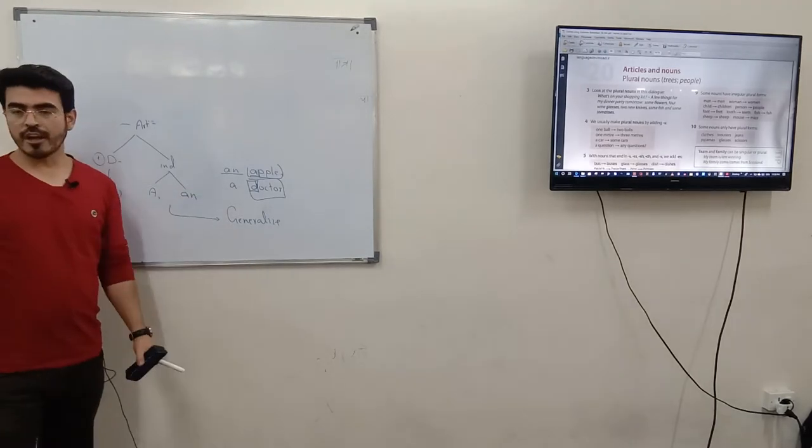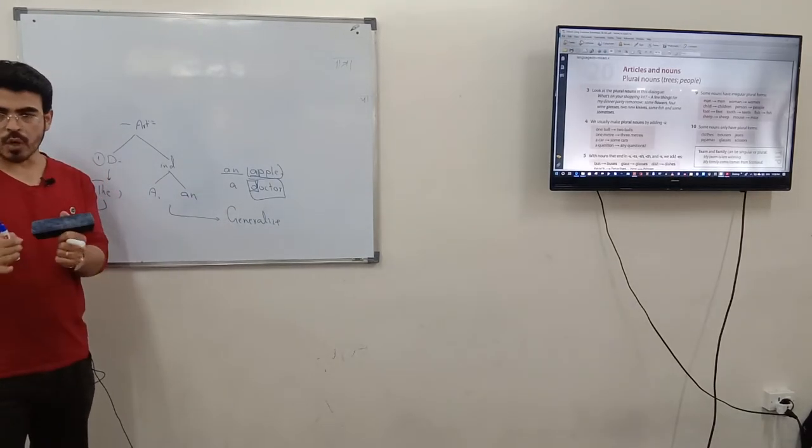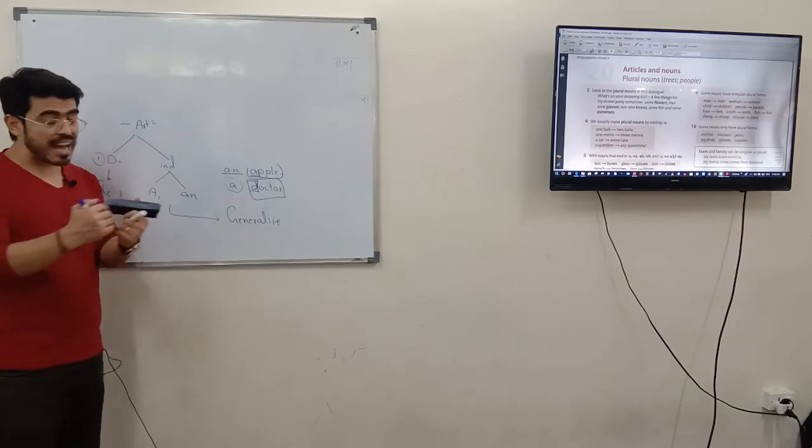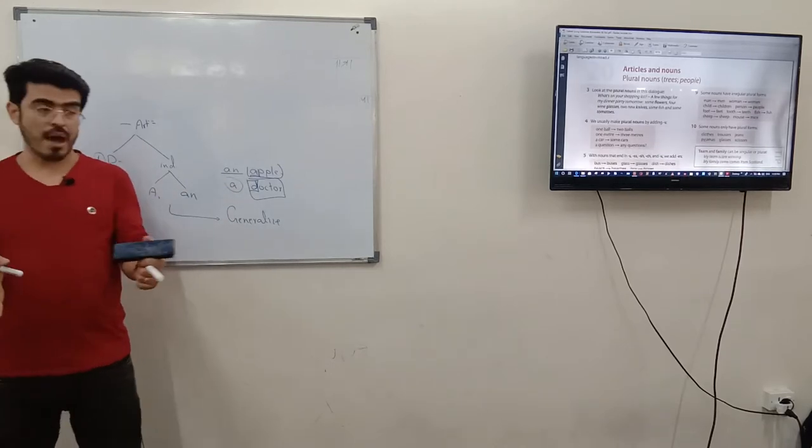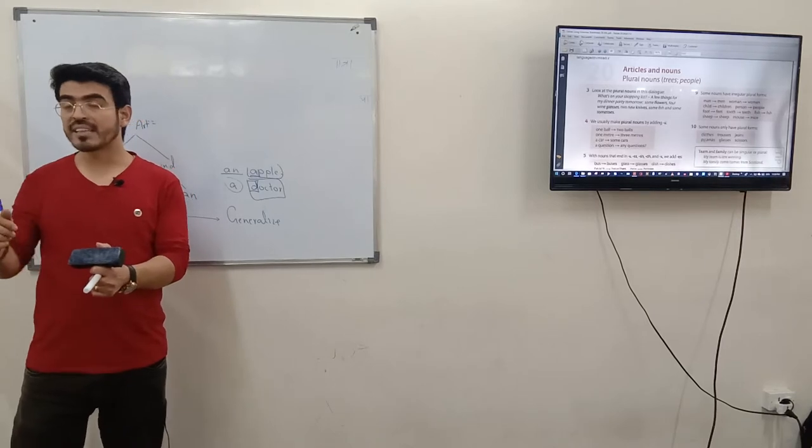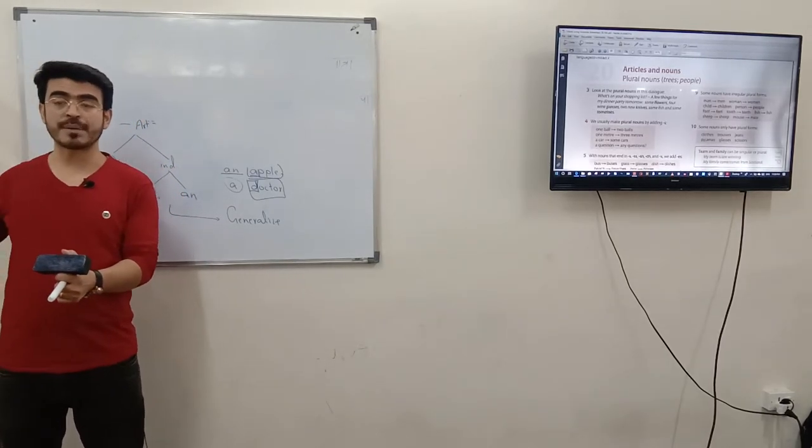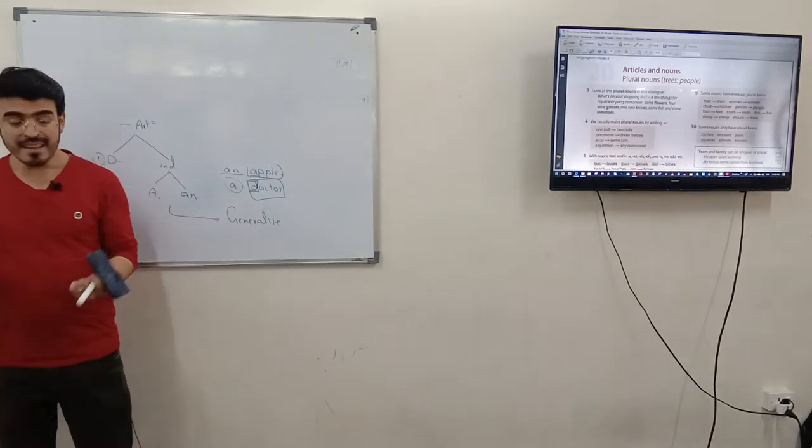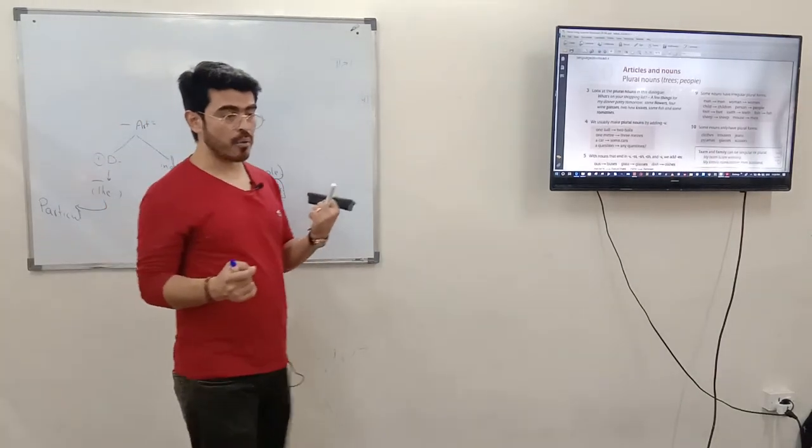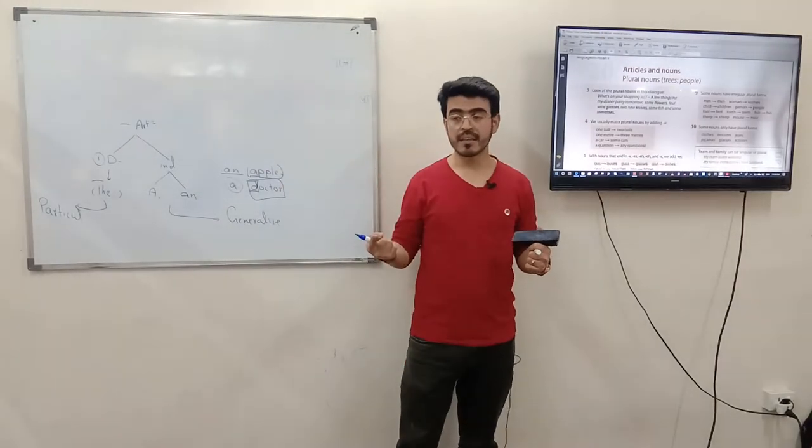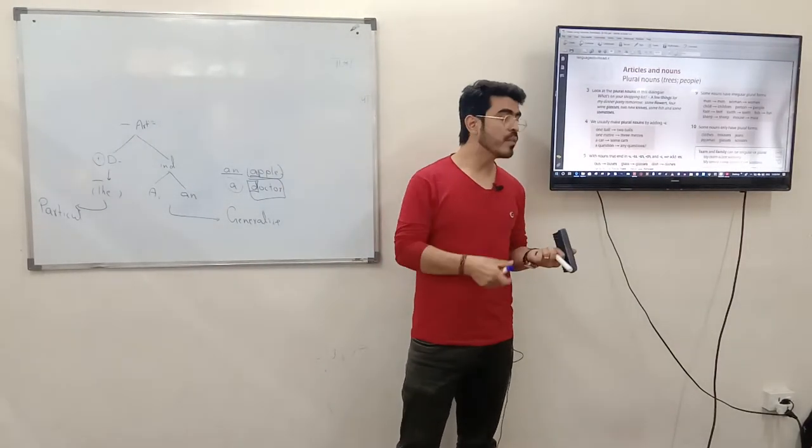Or you can say that I saw a cat. You saw a cat. So if I am using a, it means I am generalizing the noun. I saw a cat. But the second time I am not going to generalize. The second time I am specifying the noun. The cat was fat. Which cat was fat? The cat which I saw yesterday.